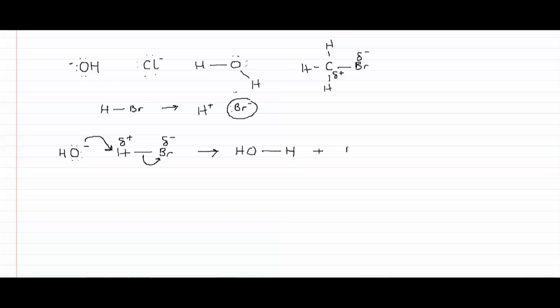With the previous H-Br bond having been broken. And notice how we're using curly arrows here - full curly arrows to denote the movement of a pair of valence electrons.